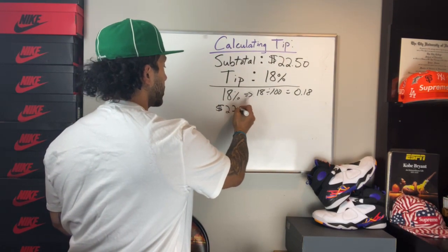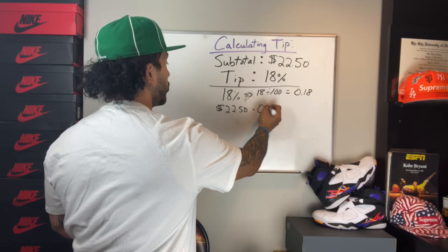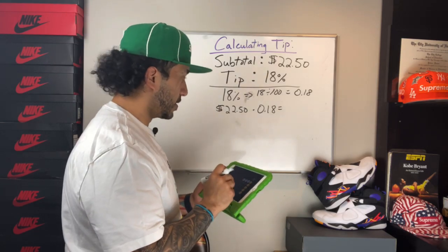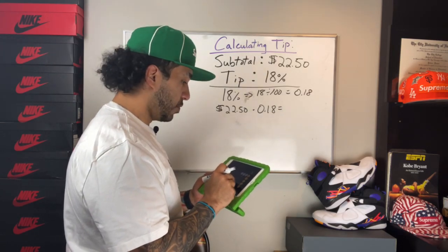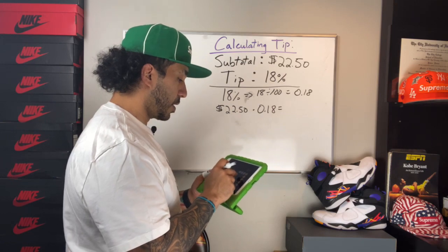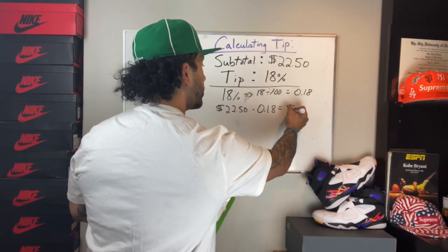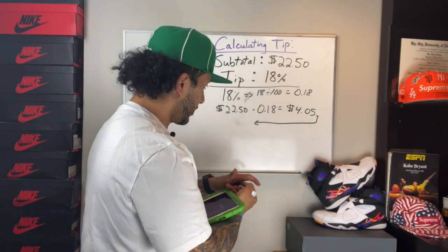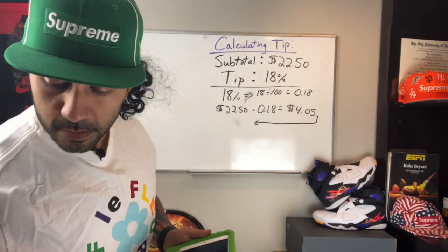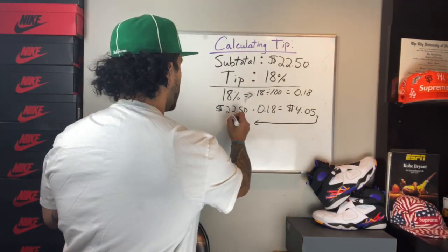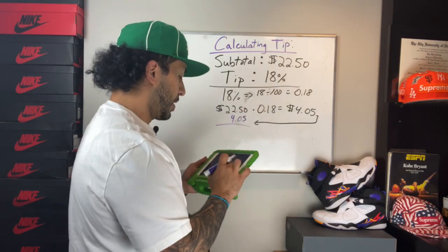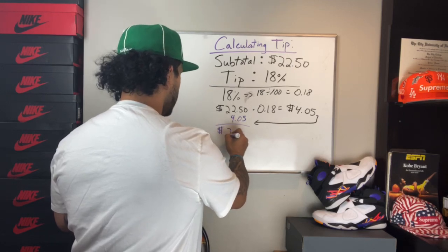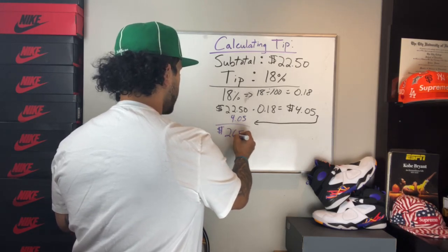Step two: we're going to take our total of twenty-two dollars and fifty cents and multiply it times zero point one eight. Let's pull out our calculator — a calculator is not cheating. Twenty-two fifty times zero point one eight gives us a tip of four dollars and five cents. We add that to the subtotal of twenty-two fifty, lining up our decimals, and we get a final total of twenty-six dollars and fifty-five cents.